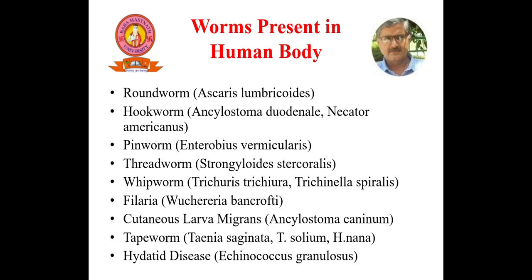Now, what are the various types of worms present in the human body? The common name and the biological name are given in brackets. Commonly, worms present in the human body include Round Worm (Ascaris lumbricoides) and Hookworm (Ancylostoma).